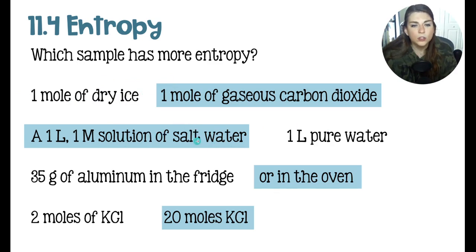Next up, we have salt water and pure water, one liter apiece. The salt water has more stuff in it. It is more chaotic, more disorganized. Pure water is just H2O. This is H2O with some salt in it. So that is going to make this more chaotic and disorderly.